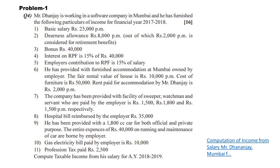Number nine: He has been provided with a 1,800 CC car for both official and private purpose. The entire expenses of Rs. 40,000 on running and maintenance of the car are borne by the employer. Number ten: Gas and electricity bill paid by employer is Rs. 10,000. Profession tax paid is Rs. 2,500. Compute taxable income from salary for assessment year 2021-22.